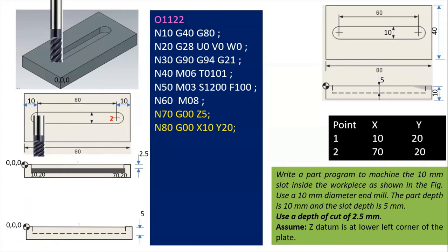Now the second part generates the profile of the component. Block N70: G00 Z5 — the tool will rapidly move to 5 mm above the surface of the component. Then G00 X10 Y20 — the tool will move to the position of X10, Y20, which is exactly at point number one. So the tool has now moved to position X10, Y20.